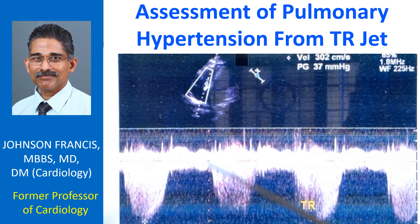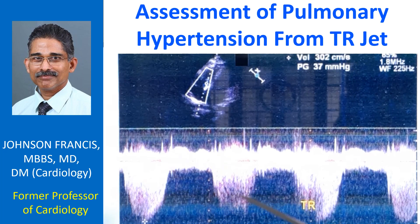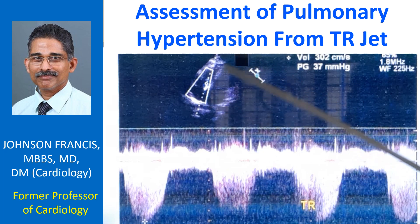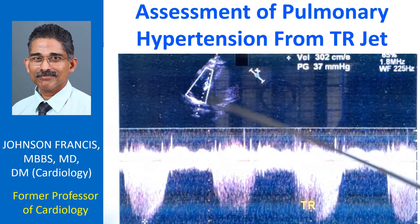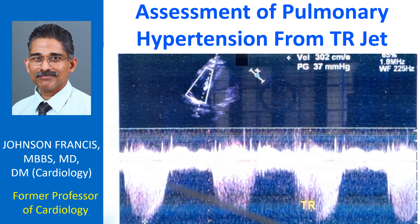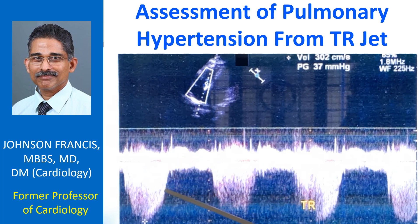This is a continuous wave Doppler jet in tricuspid regurgitation. You can see this is an apical 4-chamber view and the cursor can be seen passing across the tricuspid valve region. This is a full jet, very clear jet, tongue-shaped jet.